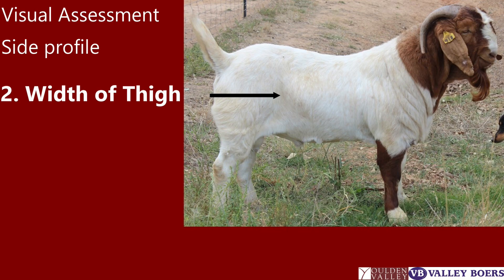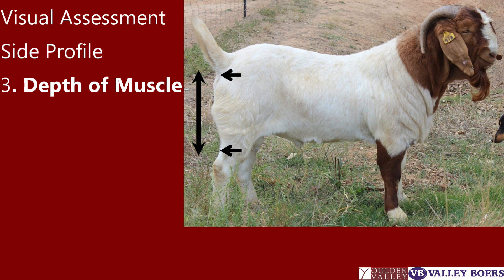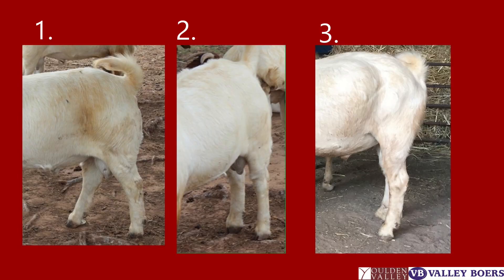The width of thigh — you can often see the outline of where the thigh ends. For depth of muscling, we are looking for it to come as far down towards the hock as possible. The first two examples show good length of muscle, while the third animal cuts in earlier and lacks depth and width.